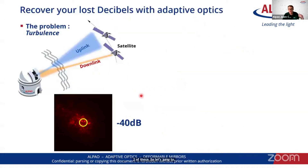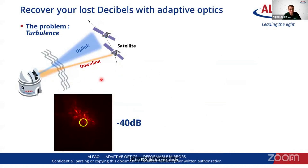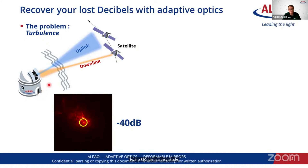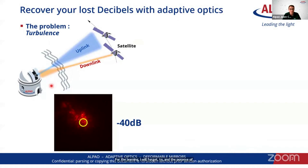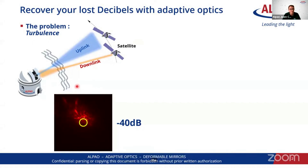Let's jump to the problem and solution we addressed. In FSO, this is a very simple schematic of a system: you have a satellite, you have a laser for the downlink — I will focus on the downlink — and you have an optical ground station. The purpose of this station is to use a telescope to feed the light into a monomode optical fiber.